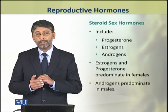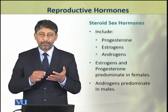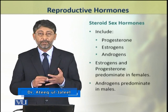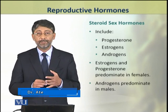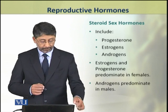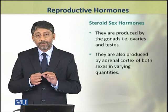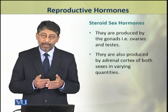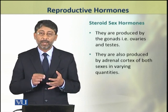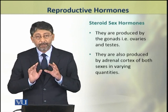First we shall discuss the steroid sex hormones, which include progesterone, estrogens, and androgens. Progesterone and estrogens predominate in female animals, while androgens predominate in male individuals. The steroid sex hormones are produced by the gonads — that is, the testes and ovaries. Small quantities of these hormones are also produced by the adrenal cortex of both sexes in varying quantities.